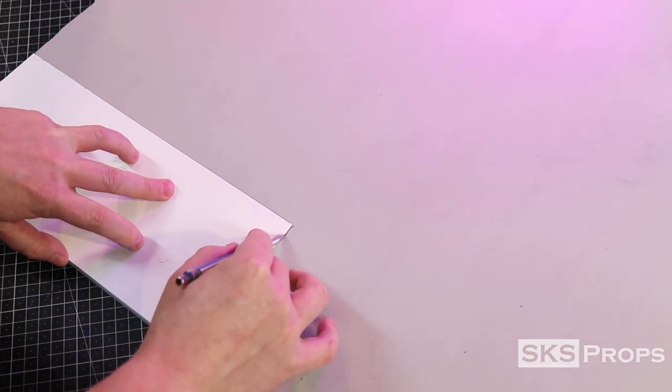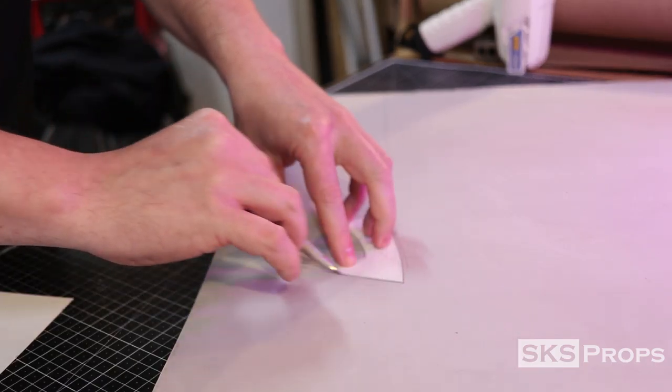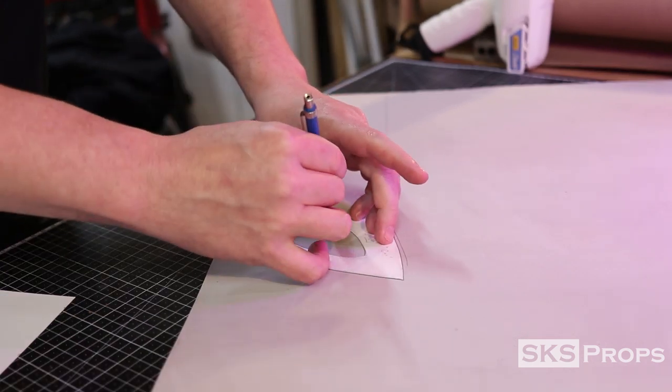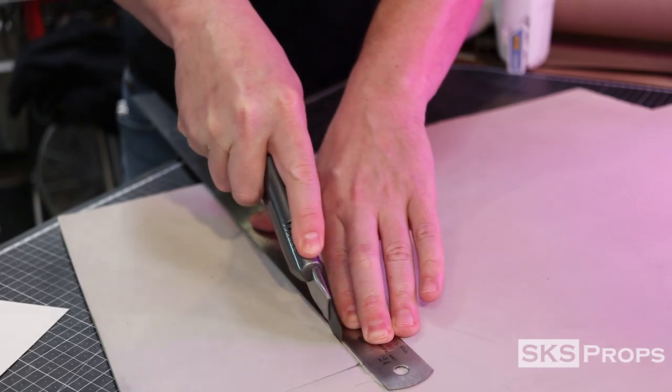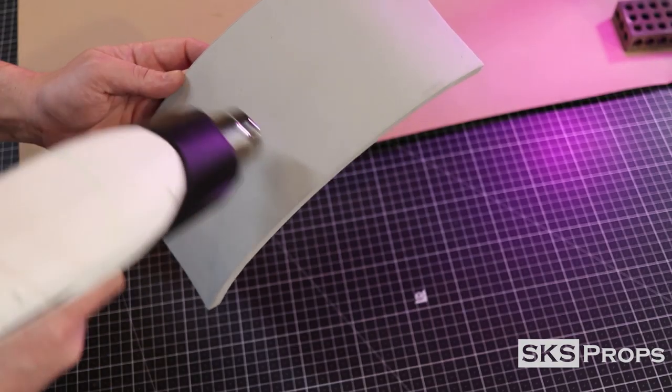Taking my sidewall rectangular template, I transfer that onto some 10mm HD foam along with the handle. I cut out this piece with a utility knife and then using a heat gun, I start to warm up the foam.